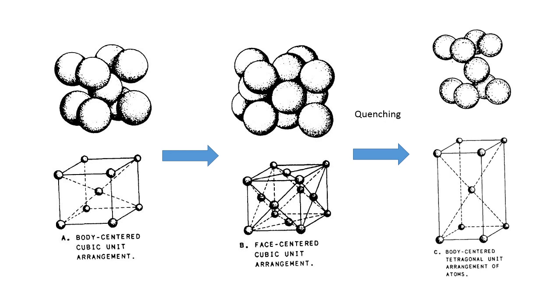Here we have the basic arrangements of atoms in the iron system. On the far left, we've got body-centered cubic, which is how iron and steel are at room temperature. If we heat it up through a transformation temperature, all those atoms go through an allotropic phase transformation from body-centered cubic to face-centered cubic.